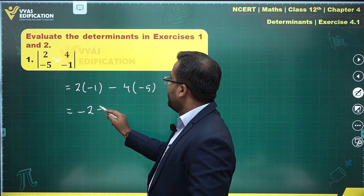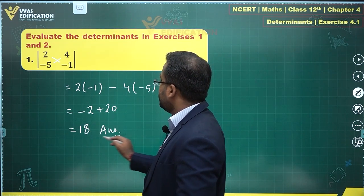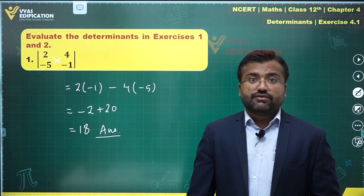So you have minus 2 and plus 20. So this is equal to 18. This determinant the value is equal to 18. That's your answer for this question over there.